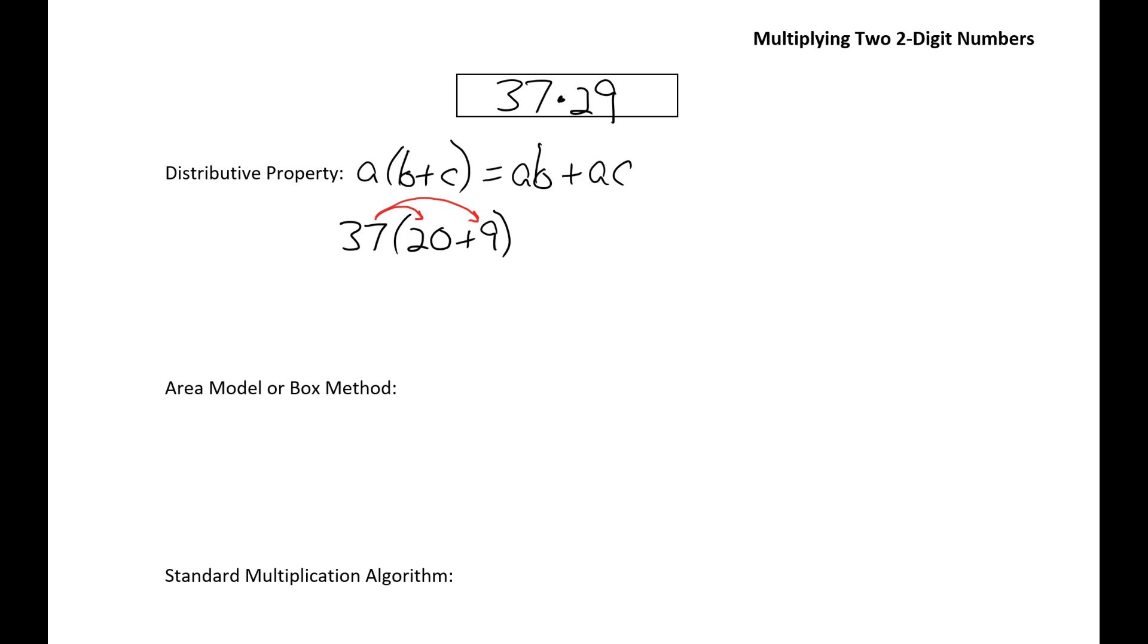So the part on the right side of the equals sign would look like this: 37 times 20 plus 37 times 9.